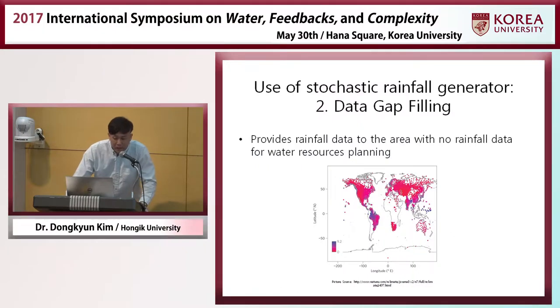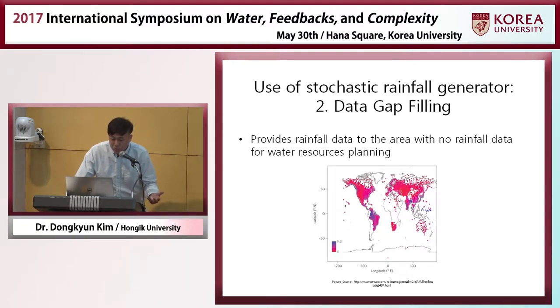The stochastic rainfall generator can also be used for data gap filling. This is a map of the world showing the locations of rain gauges. But many areas — even though there are many rain gauges elsewhere — do not have rainfall data where it is needed, for example to develop water resource plans. For these areas, the stochastic rainfall generator can provide the rainfall data.